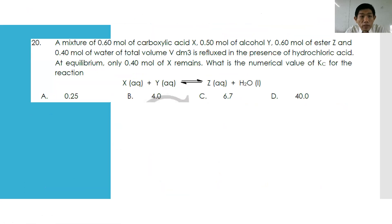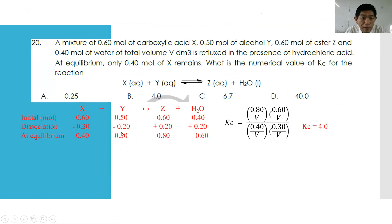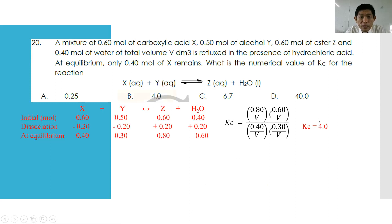Number twenty: a mixture of 0.60 mol carboxylic acid, 0.50 mol alcohol, 0.60 mol ester, and 0.40 mol water in a total volume of B dm³ is refluxed in the presence of hydrochloric acid. At equilibrium, 0.40 mol of X remains. For X + Y → Z + H₂O, initial values are 0.6, 0.5, 0.6, 0.4; change is −0.2, −0.2, +0.2, +0.2. At equilibrium: X = 0.40, Y = 0.30, Z = 0.8, H₂O = 0.6. Substituting into Kc gives Kc = 4.0.